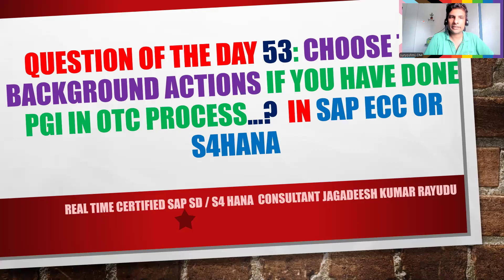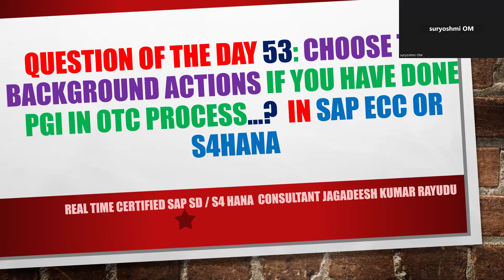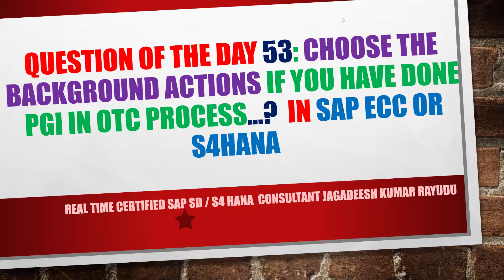Hello folks, welcome back to question of the day 53. Let's read through the options. Choose the background actions if you have done PGI in OTC process — that means when you have done post goods issue, in your delivery document, what are the background actions and where are they going to get updated?